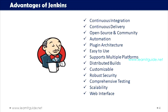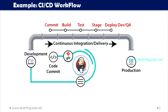Jenkins is also highly scalable and can handle the needs of both small and large organizations. With distributed builds, you can scale horizontally by adding more build agents as your project grows. Finally, Jenkins provides a web-based user interface for configuration, job management, and monitoring. This makes it easily accessible to both developers and operations teams, with support for role-based access control. These are some of the key advantages of Jenkins, and there are many more. Let's now understand the CI/CD workflow from this diagram.